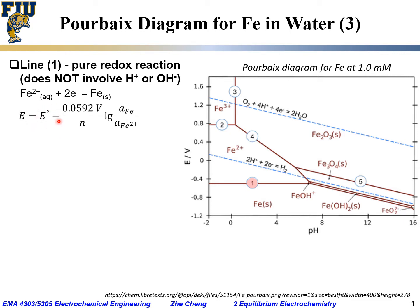From the Nernst equation, the cell potential will be the standard cell potential minus 0.0592 volt divided by n — still assuming 25°C — times the log of the activity of the product (solid iron) divided by the activity of the reactant (Fe²⁺). This gives us the Nernst potential.